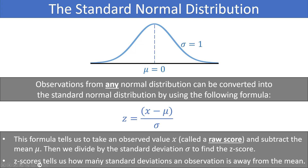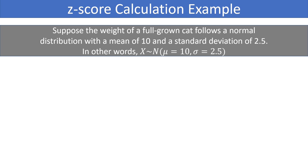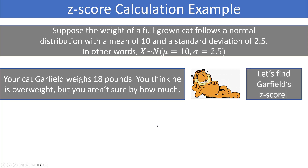Z scores tell us how many standard deviations an observation is away from the mean. Let's look at an example. Suppose the weight of a full-grown cat follows a normal distribution with a mean of 10 and a standard deviation of 2.5 — that is, X ~ N(10, 2.5). Your cat Garfield weighs 18 pounds. You think he's a bit overweight but you're not sure by how much. Let's find Garfield's Z score.